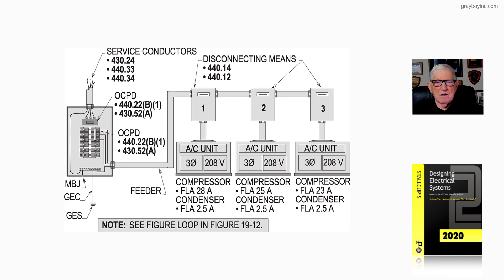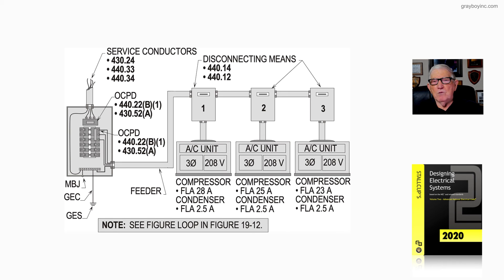Make sure you look at the figure loop, because it continuously loops you through the design book back to where you started, so that you get the full requirements to size all elements involved for a feeder circuit — including the overcurrent protection device and conductors supplying two or more units on a feeder. Next, we will do the calculation.